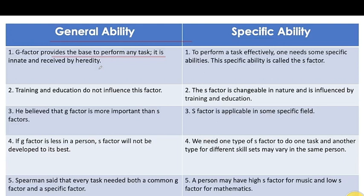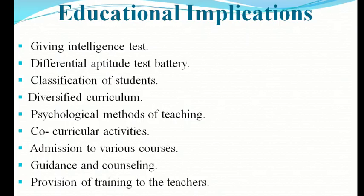A person may have a high S-Factor for music and a low S-Factor for mathematics. This illustrates how specific abilities differ within the same individual. These concepts form the basis for the educational implications of Spearman's two-factor theory.